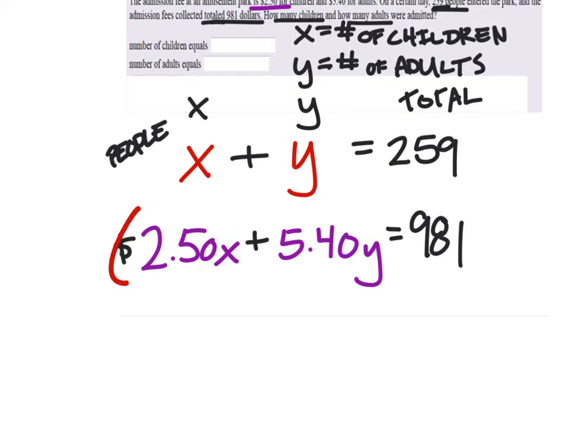And so we can multiply this entire equation by 10. If you wanted to multiply it by 100, it would still get rid of the decimals. Now be careful. A common mistake on the test is people will only multiply these two numbers by 10 and not the total. We have to multiply all the numbers by 10.